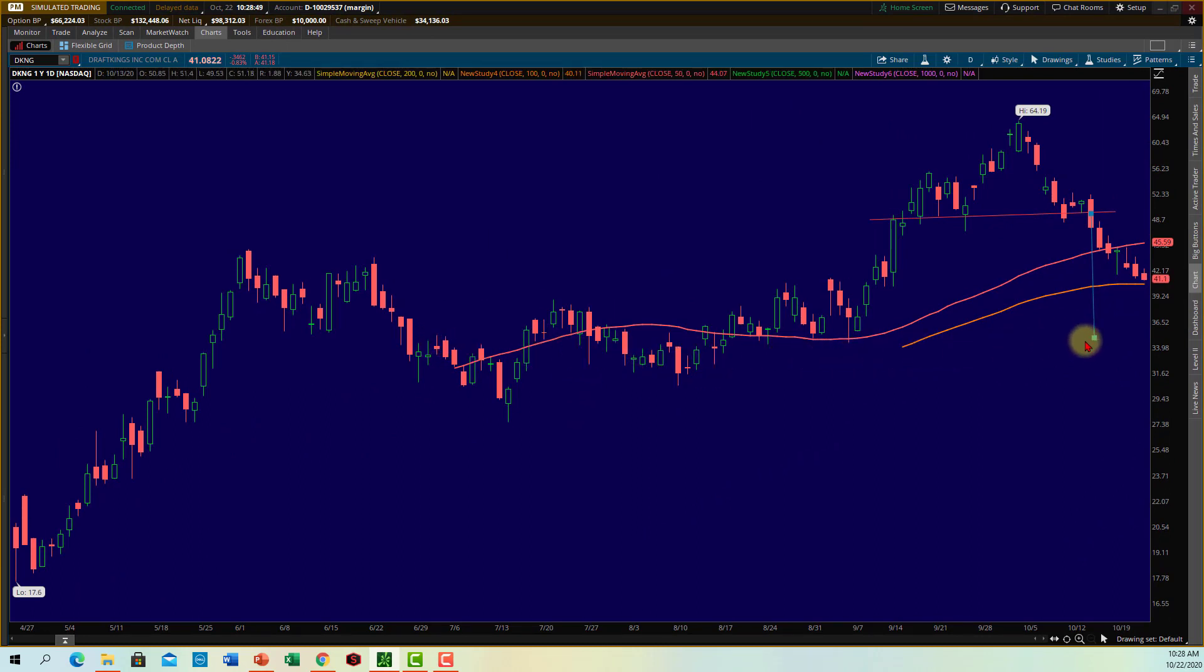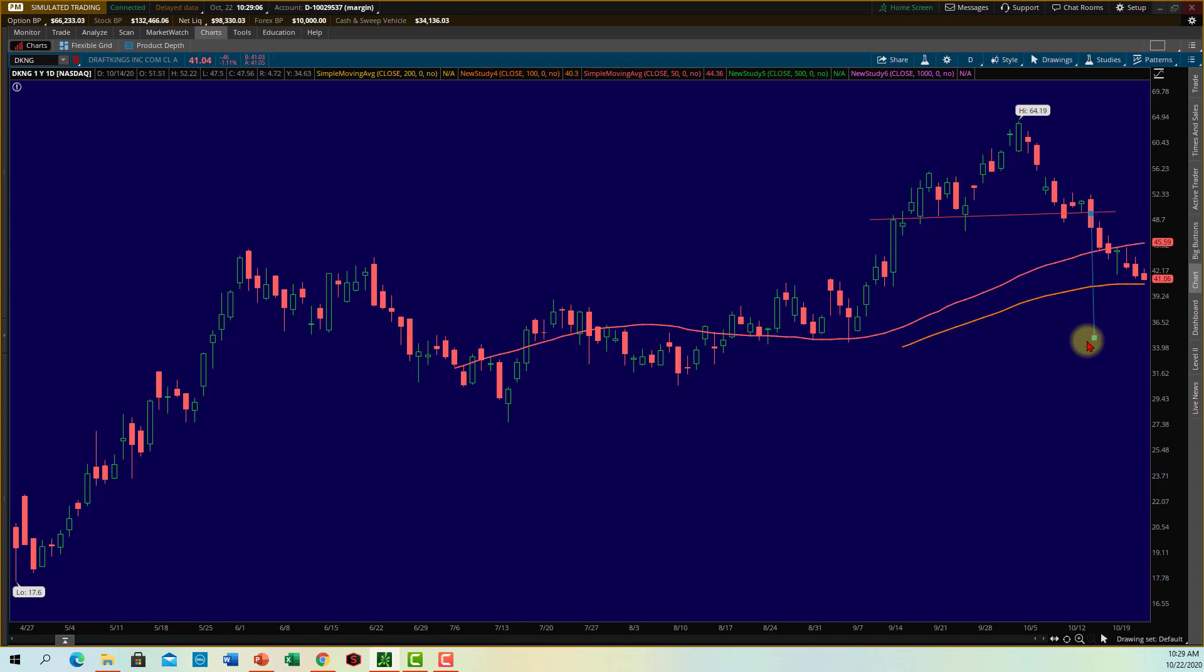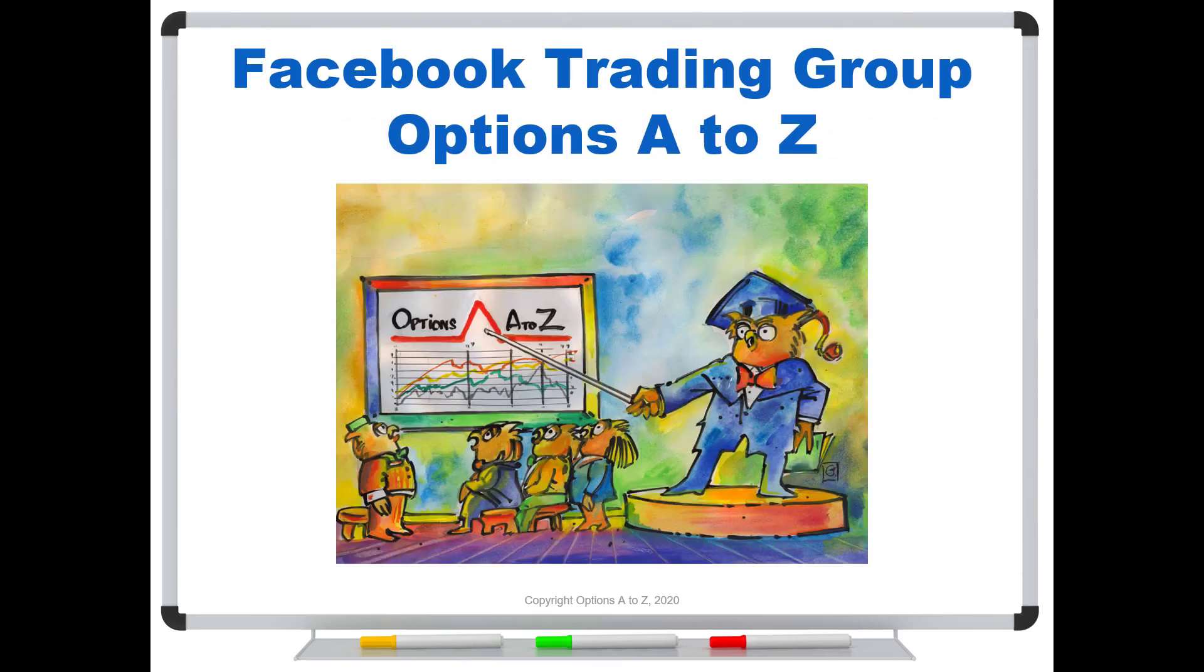So I hope that helps to give you the basics of head and shoulders patterns. But they're very popular indicators and, quite interestingly, happen quite often. So keep your eyes open for head and shoulders tops. And for anyone who'd like to learn more about the arts and science of options trading, please check out the Alpha Trader course and Strategy Lab at optionsAtoZ.com. Also, please join us on the Facebook trading group Options A to Z. And you can find a link in the description below.